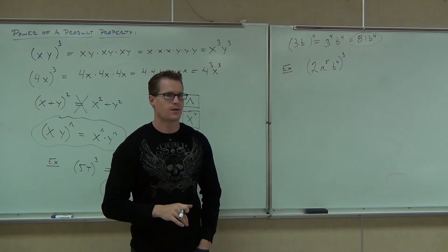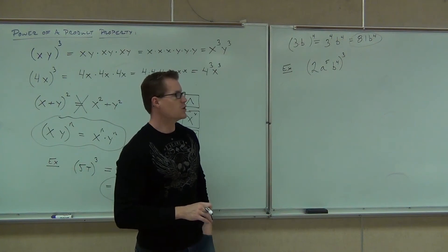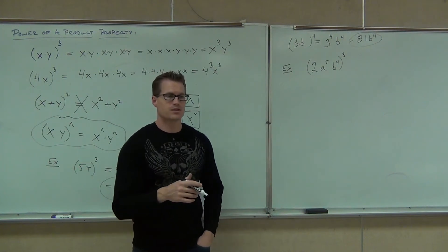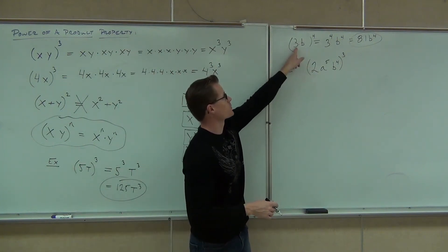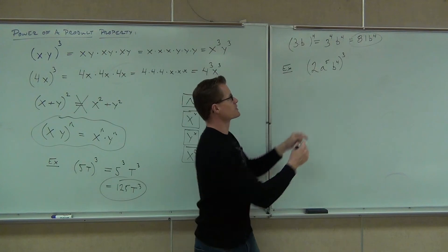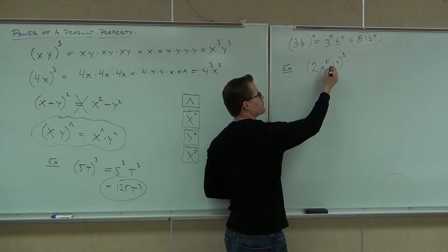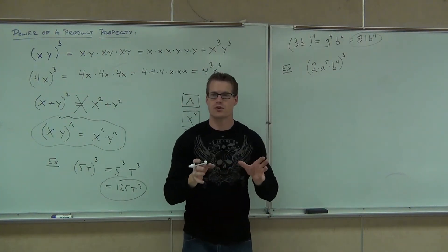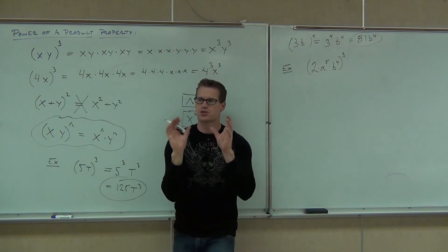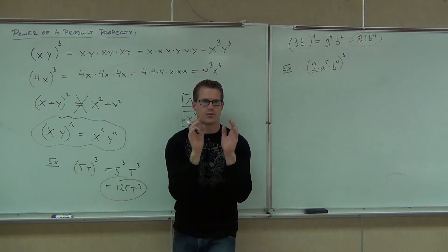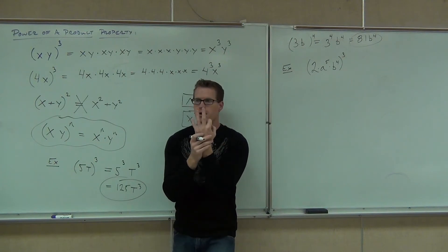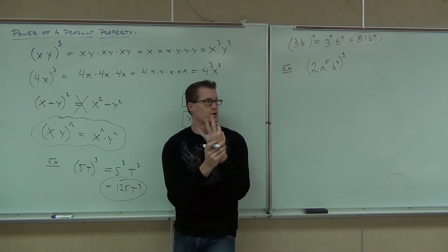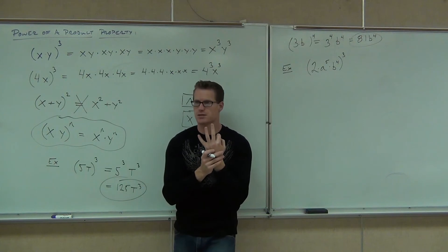Is 2a to the 5th power like one thing? No. Remember, this is very similar to this — this is like 3 times b. This is like 2 times a to the 5th times b to the 4th. So my question to you first is: how many factors do I have inside of my parentheses? One, two, or three? Three. That means three things are going to be raised to the 3rd power in this case.